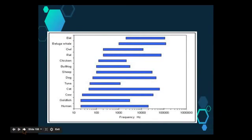As we can see in this graph, humans have quite a broad range of frequencies that they can detect in comparison to some other organisms. But if we have a look, a lot of the mammals, so the sheep, the dog, the cat, the cow, all have a fairly broad range of frequencies that they can detect.